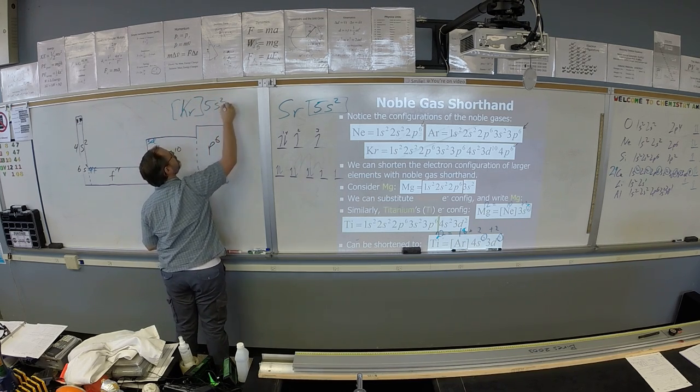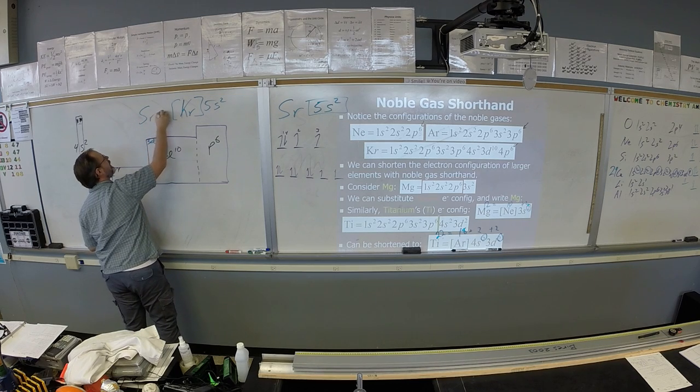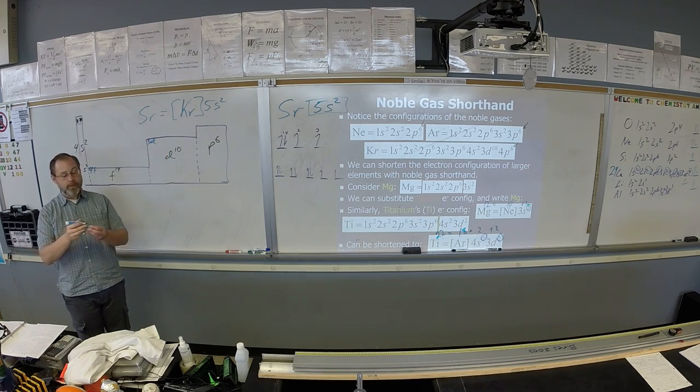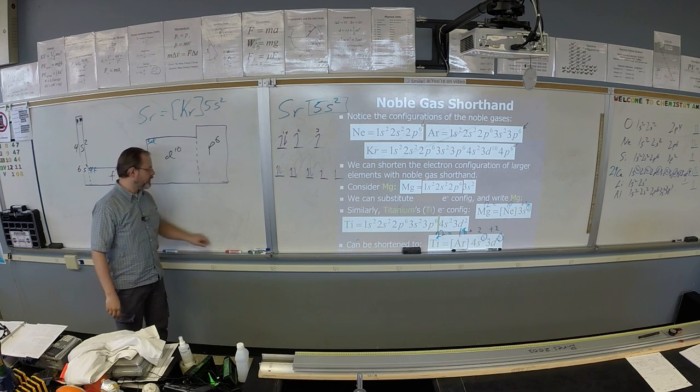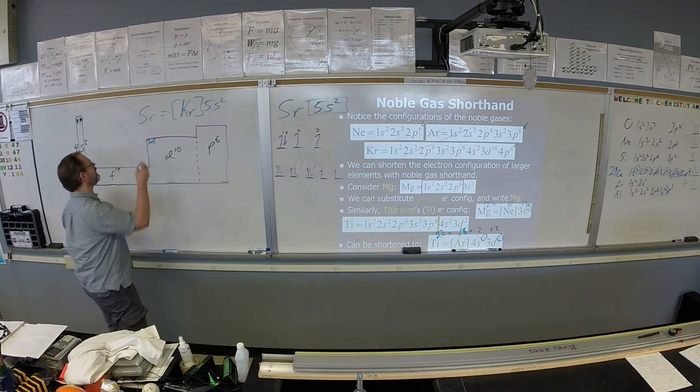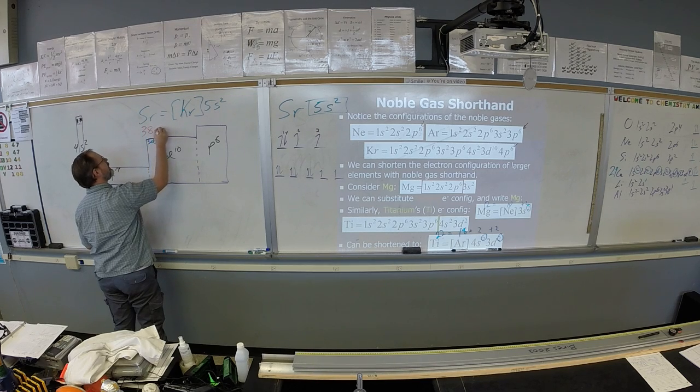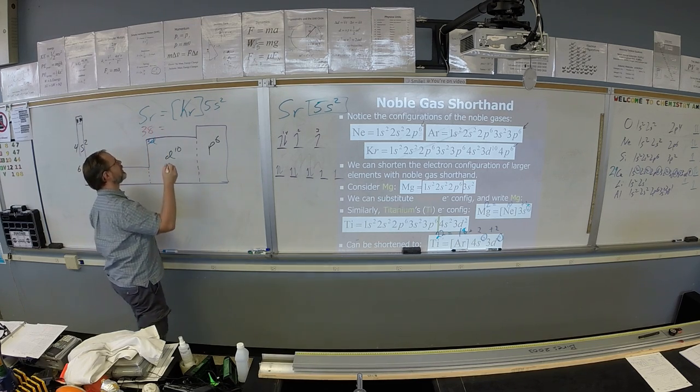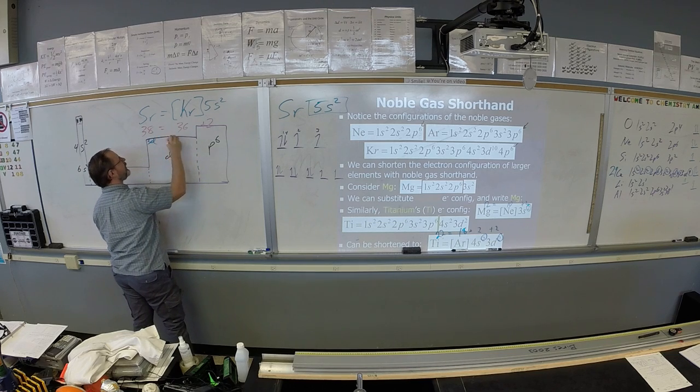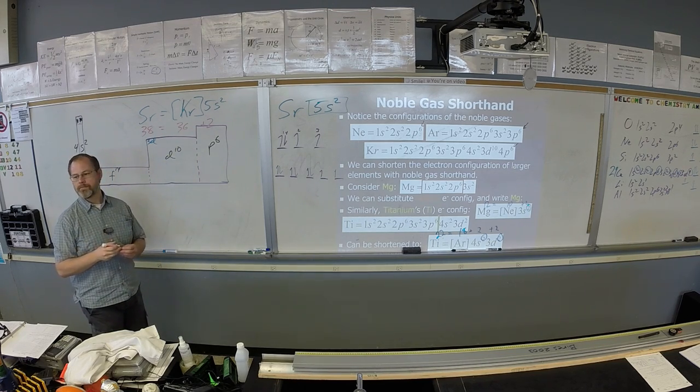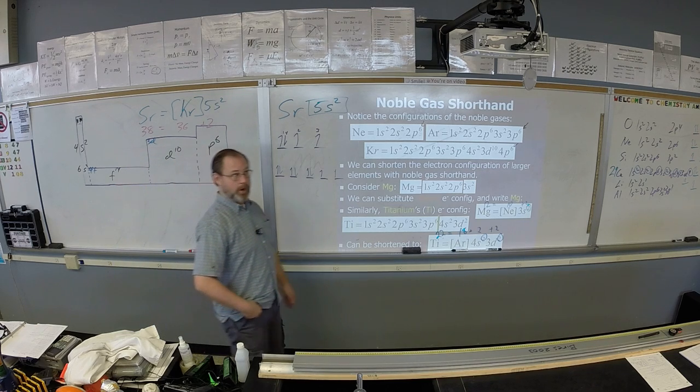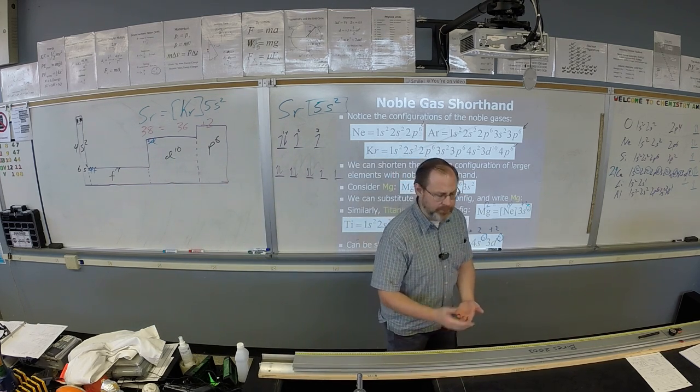That is strontium. Cool. Then we check our work. We say, well, how many electrons does strontium have? Thirty-eight. So strontium has thirty-eight. How many does krypton have? Thirty-six. And then we have the two more, and does thirty-six plus two equal thirty-eight? Yes.